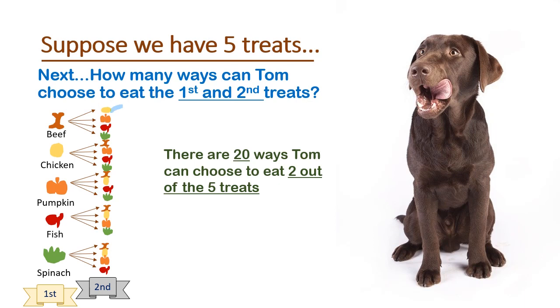There are a total of one, two, three, four, dot dot dot. I count them all up. 20 different ways Tom could have chosen to eat two out of the five treats.